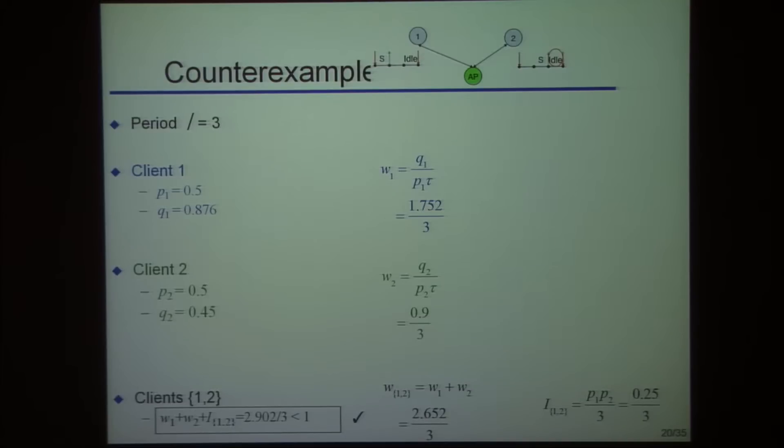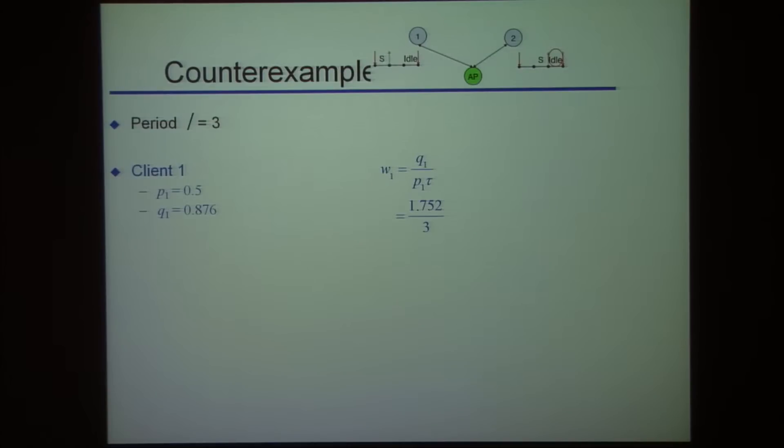Let's throw away client two, forget client two. We just want to serve client one. Is that possible? Client one's workload is fine, but now the idle time has increased. When you get rid of clients, idle time increases. The workload may increase and the idle time actually increases a lot. In this case with probability P1, if you're successful you get two idle slots. If unsuccessful in the first and successful in the second, you get one idle slot. The idle time total is greater than one. So this access point cannot keep both these clients happy. Impossible.